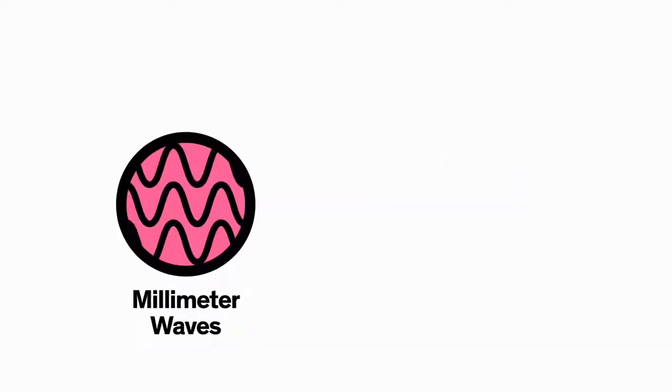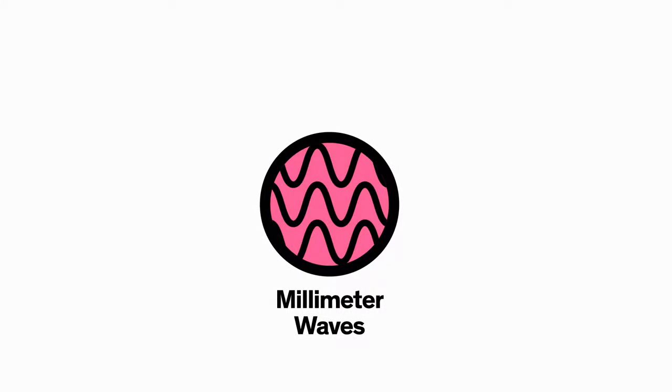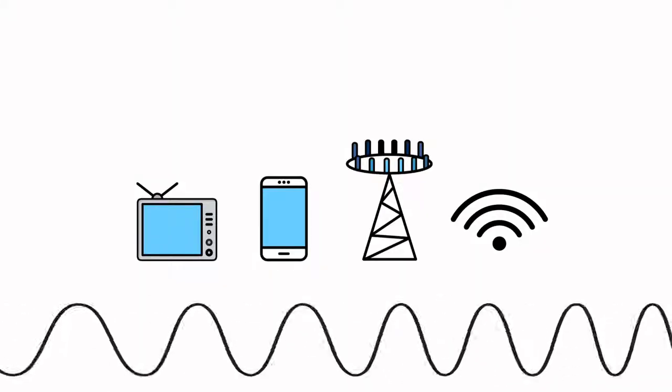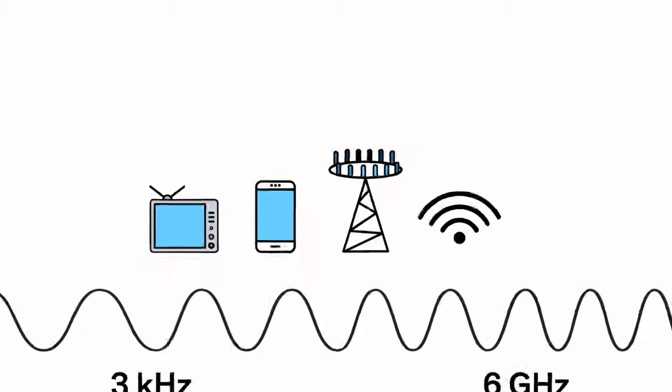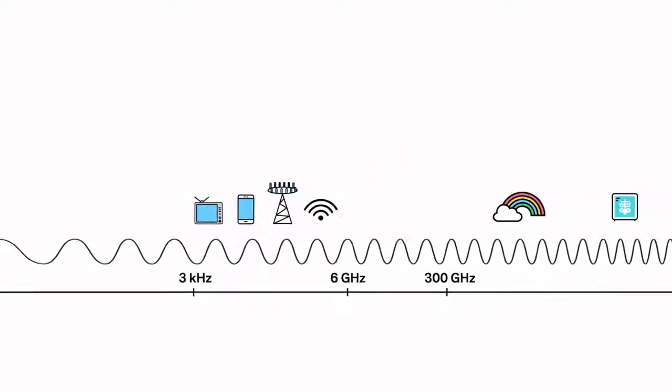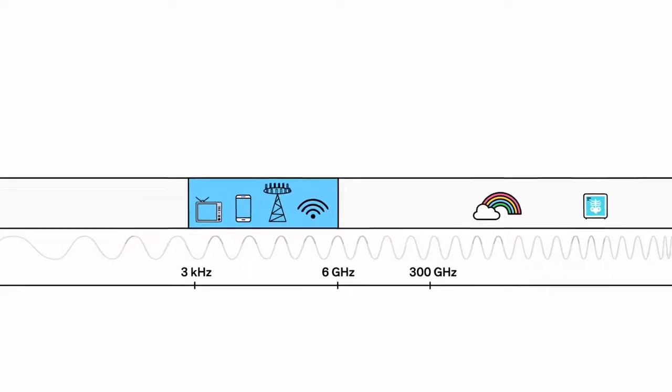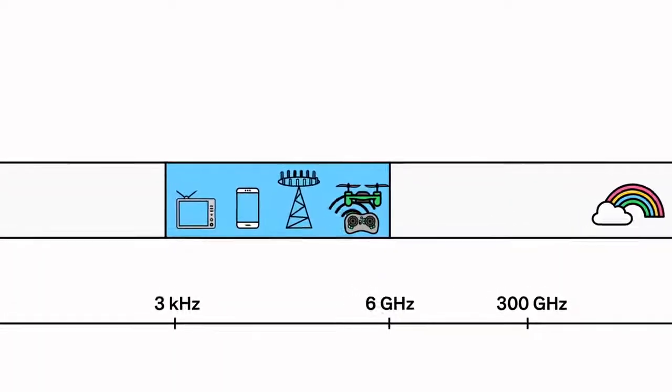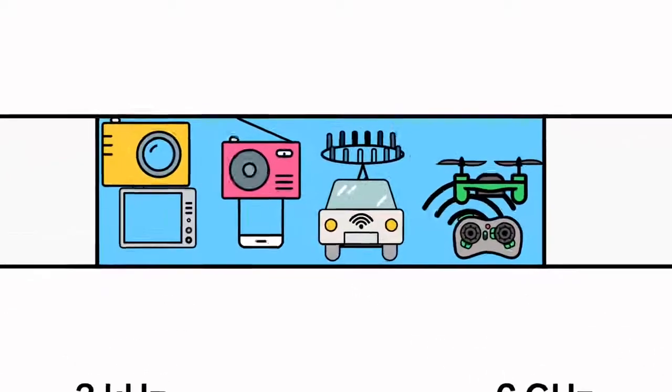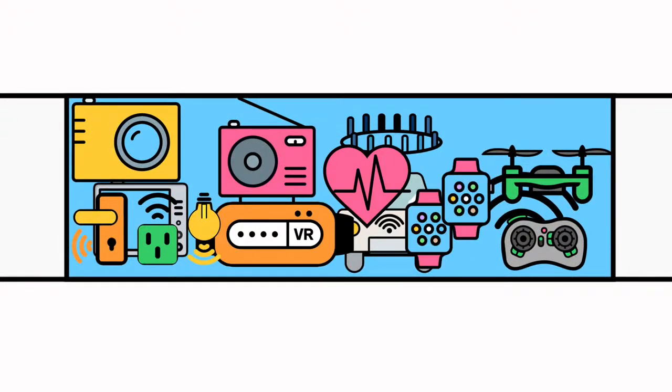First up, technology number one, millimeter waves. Your smartphone and other electronic devices in your home use very specific frequencies on the radio frequency spectrum, typically those under 6 GHz. But these frequencies are starting to get more crowded. Carriers can only squeeze so many bits of data on the same amount of radio frequency spectrum. As more devices come online, we're going to start to see slower service and more dropped connections.